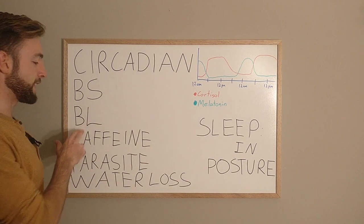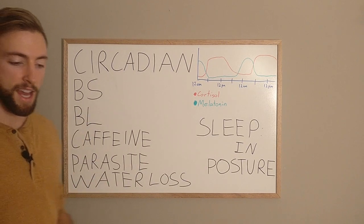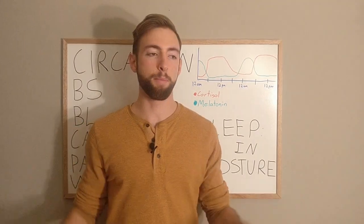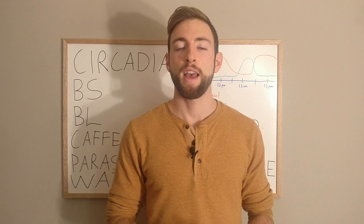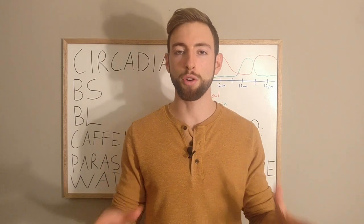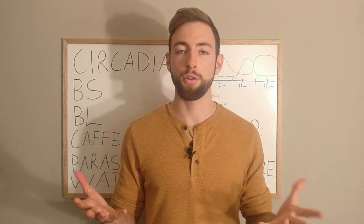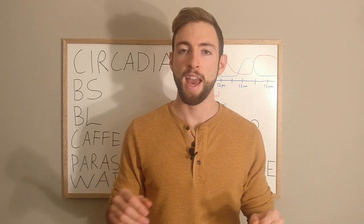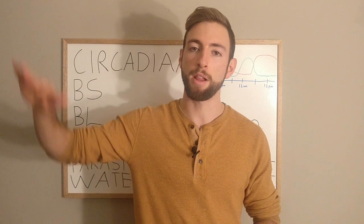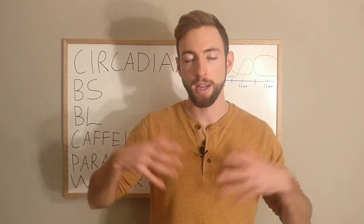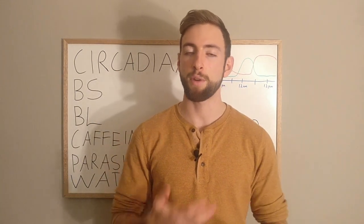Next thing, blue light. Blue light is a spectrum of light given off by many different light sources. The sun gives it off, and then when the sun sets, the source of blue light is gone. Our body says, okay, the sun is gone, and it prepares. It drops off its cortisol and it prepares its melatonin. It starts bringing up the melatonin, prepares us for sleep. This is when we wind down.